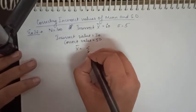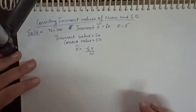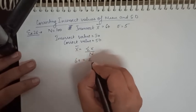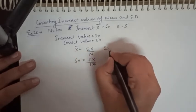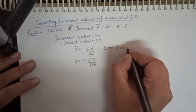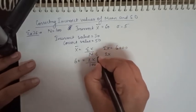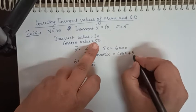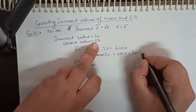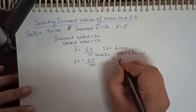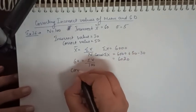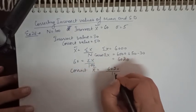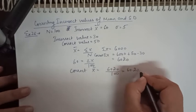Mean is given by Σx over n. We have the incorrect mean as 60, and n is 100, so Σx = 6000. Now the correct Σx is: 6000 minus the incorrect value (30) plus the correct value (50), which gives 6020. So the correct mean is 6020 over 100, which is 60.2.